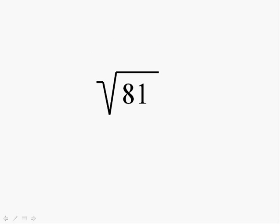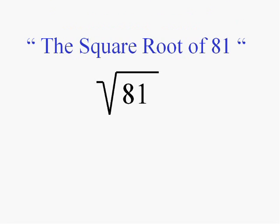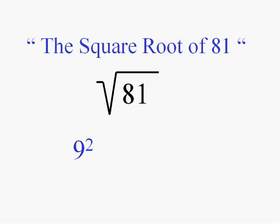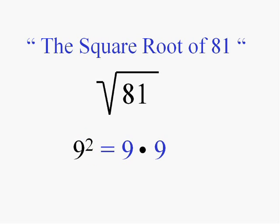Practice makes perfect. This is, of course, the square root of 81. What number squared is 81? 9 squared is the square root of 81, because 9 squared does equal 81.